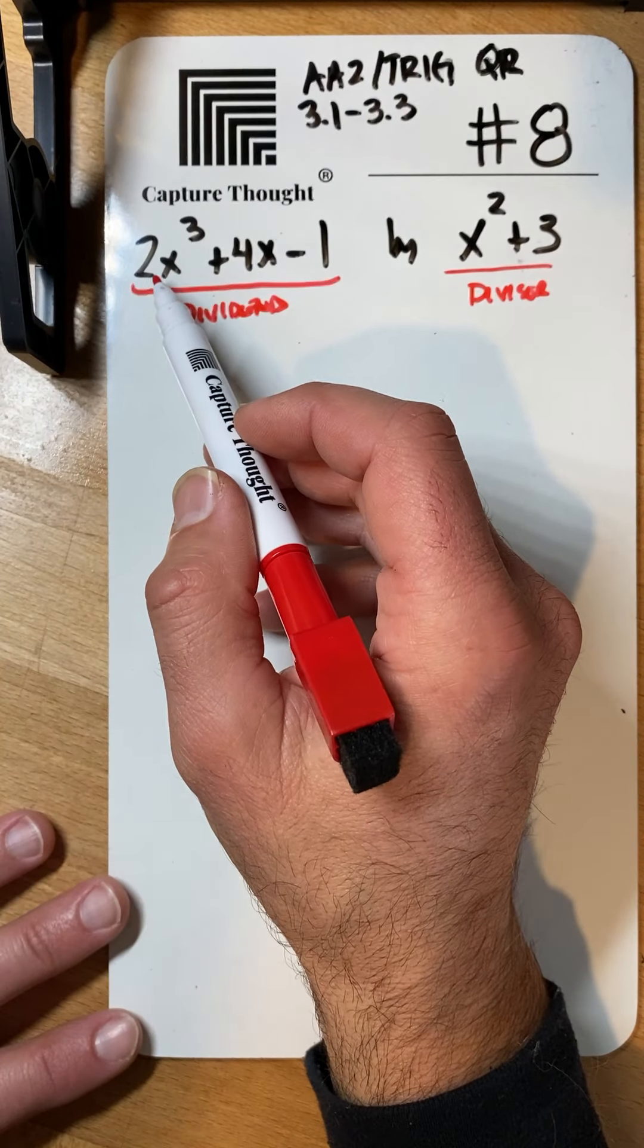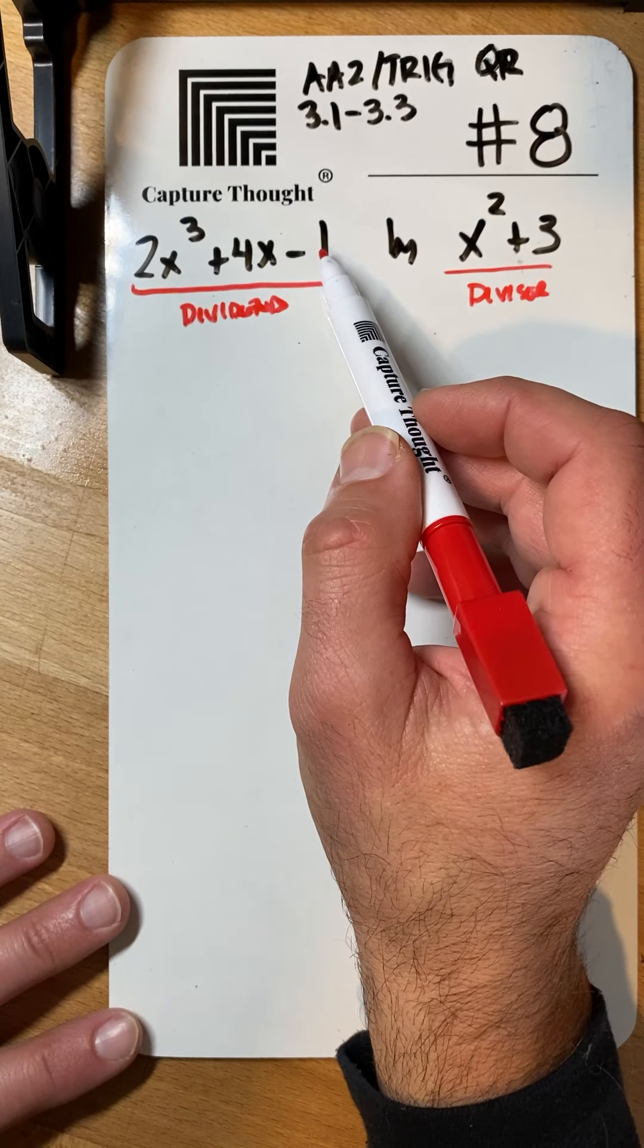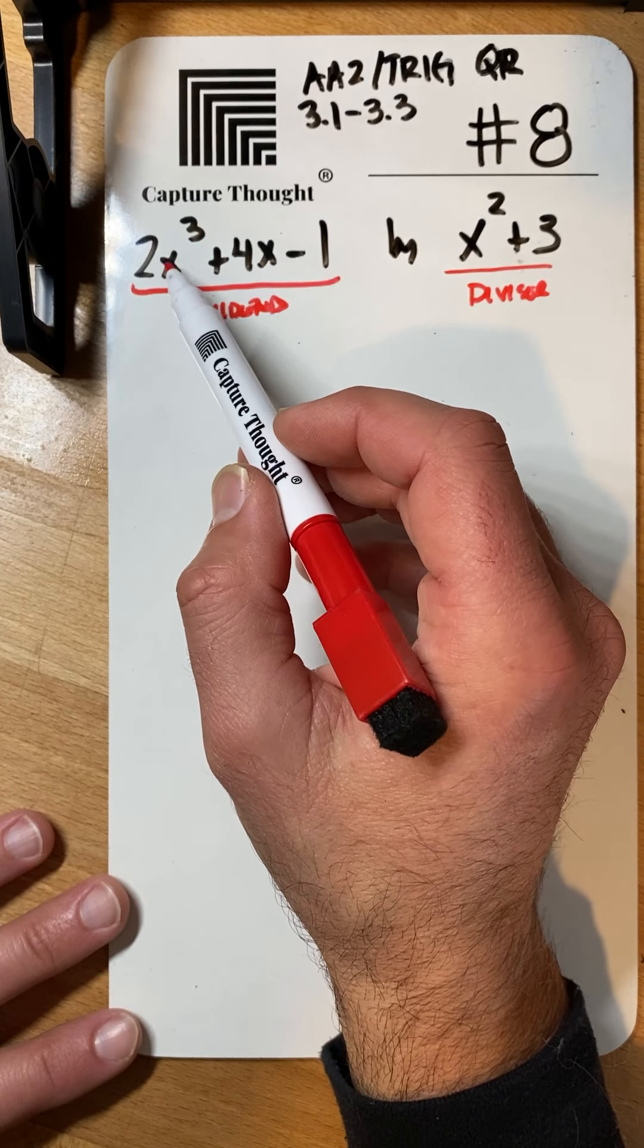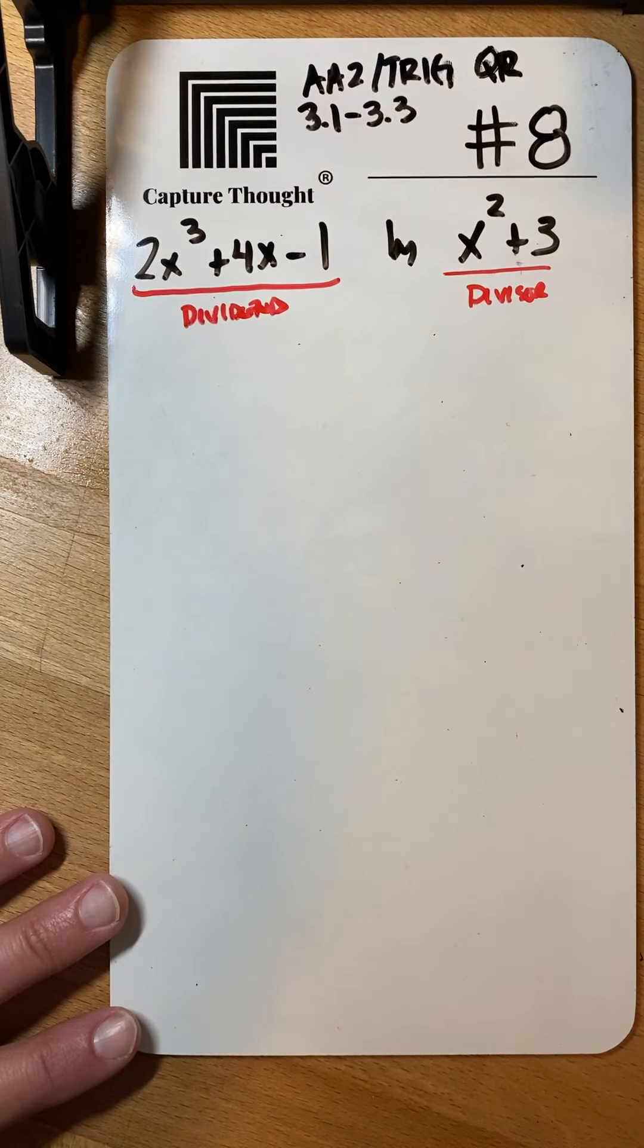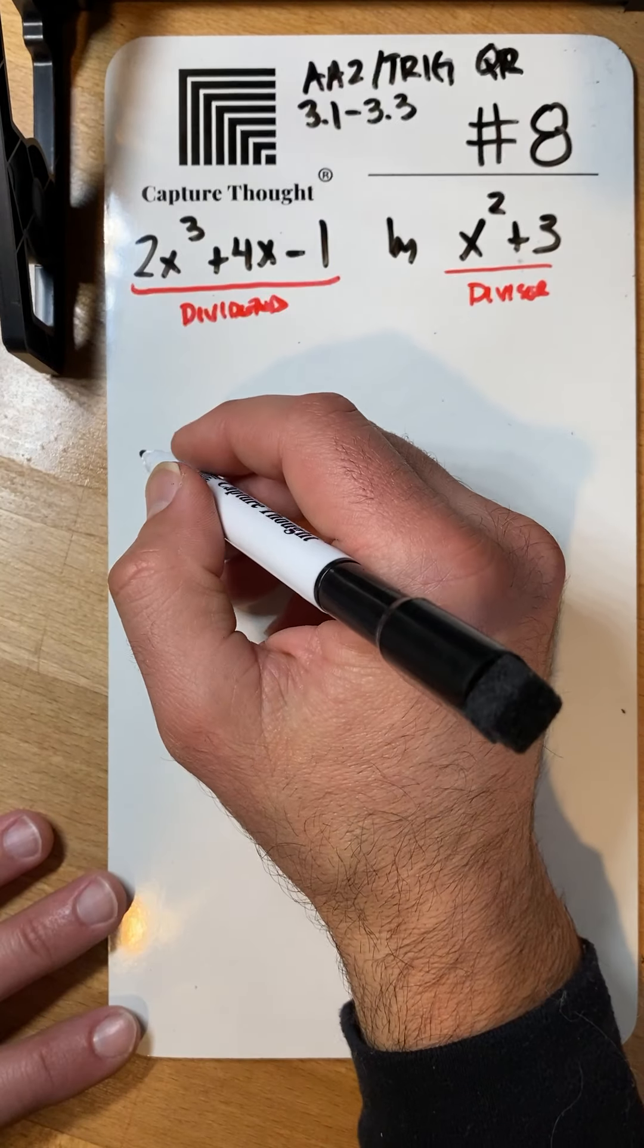And I'm also noticing that the dividend is not written in standard form because I do not have an x squared term. I jump down from x to the third all the way to x. So I'm going to go ahead and insert an x squared term. So here we go.